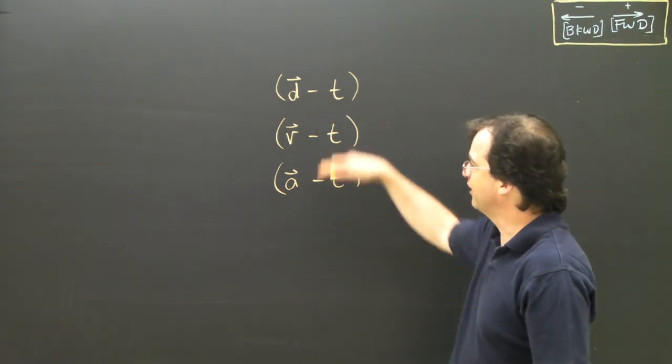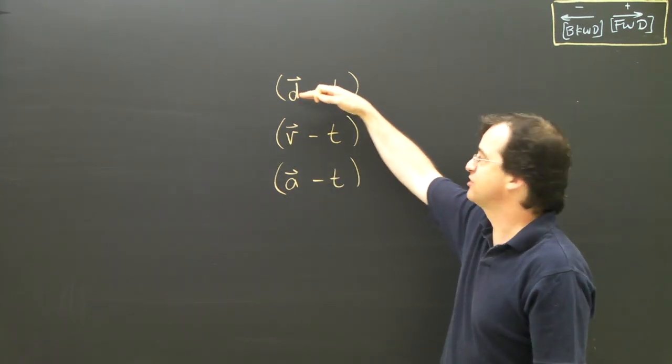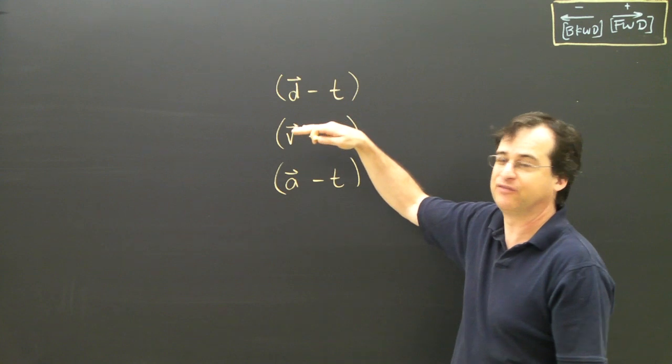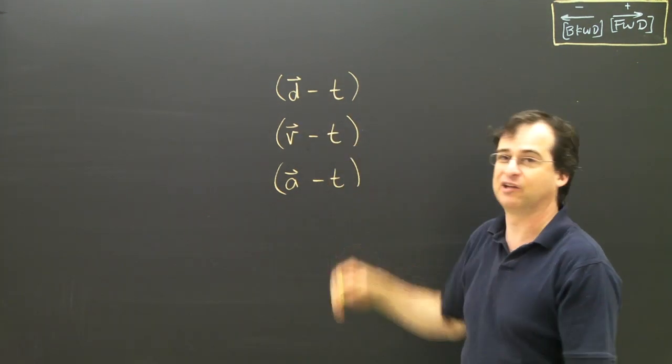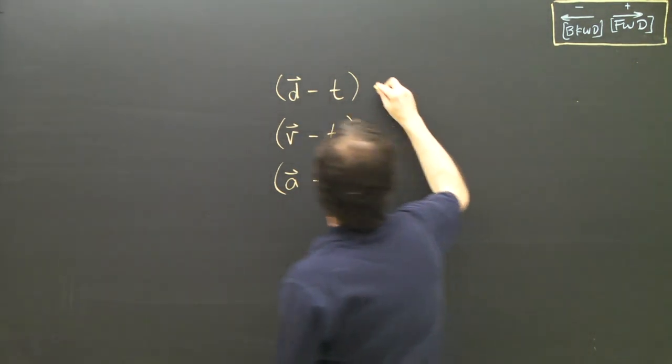And just to summarize, they're related to each other. I always put them in this hierarchy: the position-time graph at the top, the VT graph, the velocity-time graph next, and the acceleration graph here.